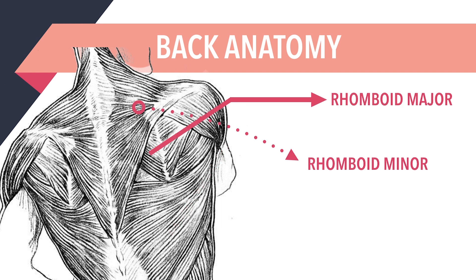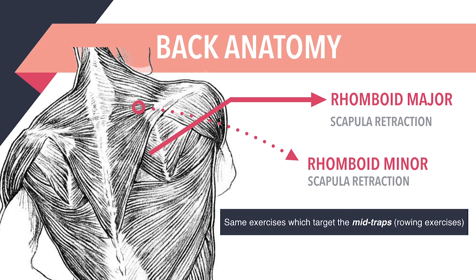Moving on, we have the rhomboid muscles. They are located on the upper portion of the back anatomy, underneath the trapezius. The rhomboid muscles can be segregated into rhomboid major and rhomboid minor, and they are both involved in scapular retraction. This means the rhomboids will be effectively targeted with the same exercises which activate the mid and lower traps.